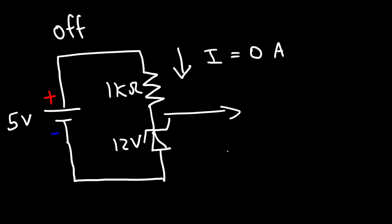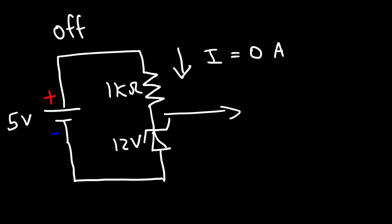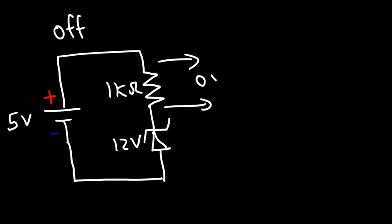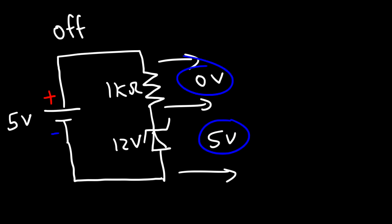Now let's say if we connect a voltmeter across the Zener diode — what voltage will it read? Because there's no current flowing in the circuit, the voltage across the resistor is 0 volts. Therefore the voltage across the Zener diode picked up by the voltmeter will be the same as the voltage of the battery — it will be 5 volts, because these two have to add up to 5.